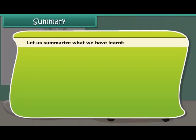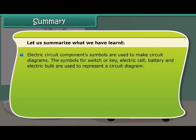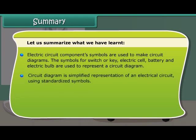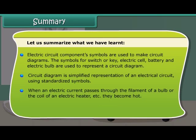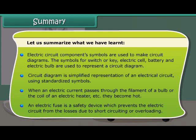Let us summarize what we have learned. Electric circuit component symbols are used to make circuit diagrams. The symbols for switch or key, electric cell, battery, and electric bulb are used to represent a circuit diagram. A circuit diagram is a simplified representation of an electrical circuit using standardized symbols. When an electric current passes through the filament of a bulb or the coil of an electrical heater, they become hot. An electric fuse is a safety device which prevents the electric circuit from losses due to short circuiting or overloading.